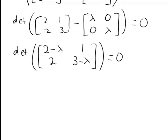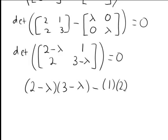This is a 2 by 2 matrix. The determinant of a 2 by 2 matrix is the product of the elements on its principal diagonal, starting from the top left. So (2-λ)(3-λ) minus the product of its elements on the other diagonal, minus 1 times 2. We're still solving this equal to zero.